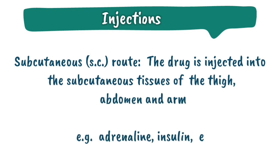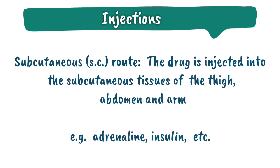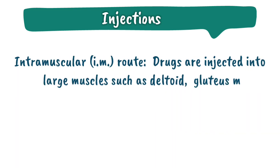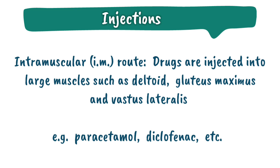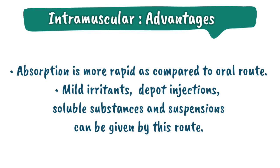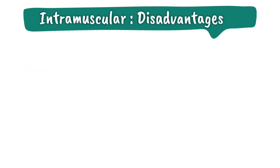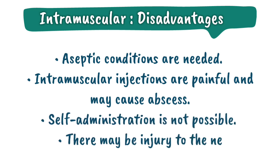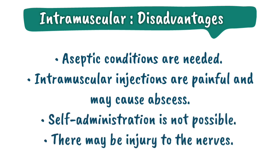Subcutaneous route — the drug is injected into the subcutaneous tissues of the thigh, abdomen, and arm, for example adrenaline and insulin. Intramuscular route — drugs are injected into large muscles such as deltoid, gluteus maximus, and vastus lateralis, for example paracetamol and diclofenac. Advantages of intramuscular route: absorption is more rapid compared to oral route; mild irritants, depot injections, soluble substances, and suspensions can be given by this route. Disadvantages: aseptic conditions are needed; intramuscular injections are painful and may cause abscess; self-administration is not possible; there may be injury to the nerves.